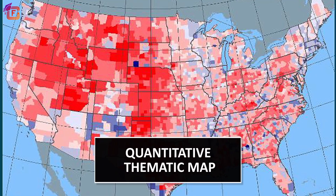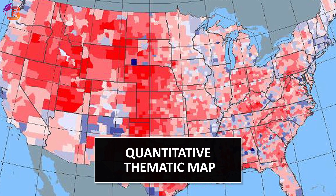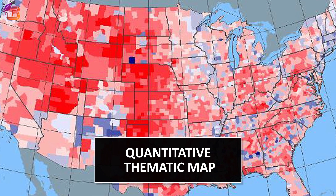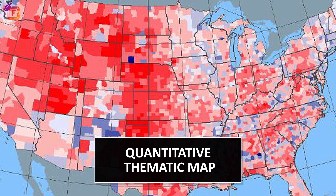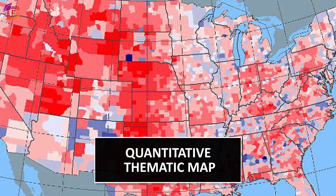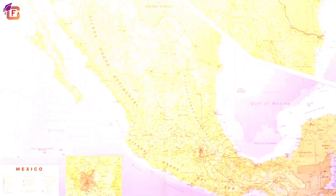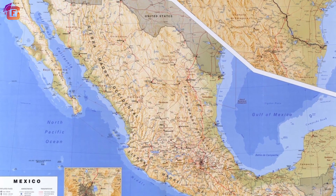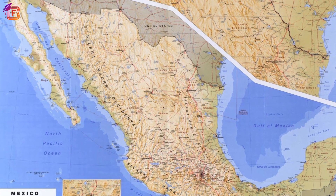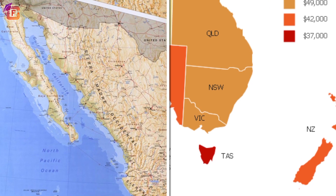Quantitative thematic maps are based on quantifiable empirical data. They are often related with the hard sciences.